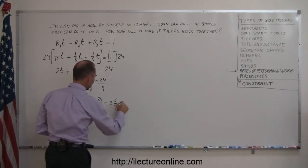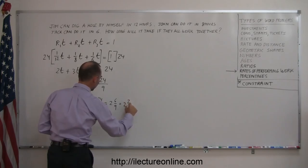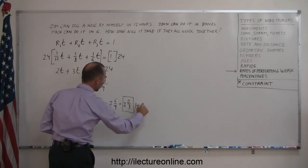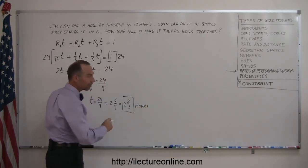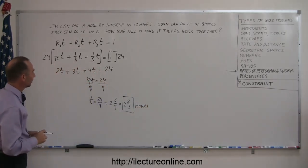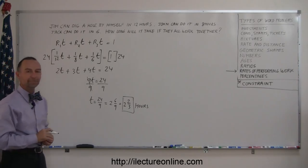6/9ths, of course, is 2/3rds, that's equal to 2 and 2/3rds. So it takes 2 and 2/3rds hours for all three of them to dig that hole together. That's how you do that.